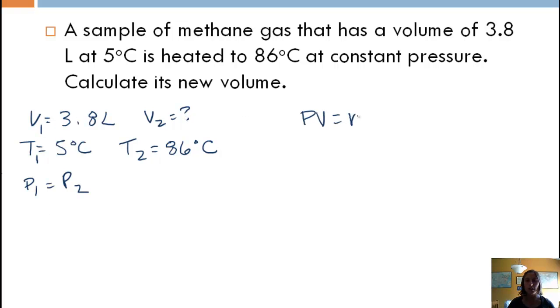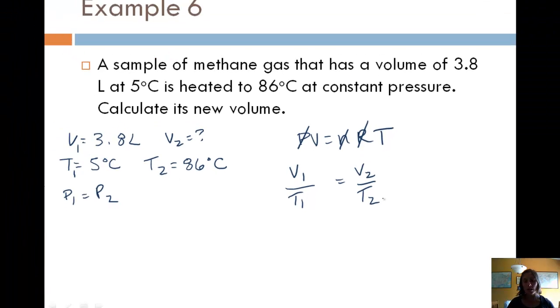If we look at the Ideal Gas Law, again, R will cancel. I'm going to cancel moles, and in this case, pressure is constant. So I'm left with V equals T. Well, that turns into the relationship V1 over T1 equals V2 over T2, and this is Charles Law. I would need to convert my temperature to Kelvin, but my liters are okay for volume. Then I would just plug in and solve for V2.